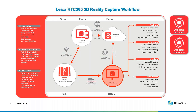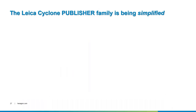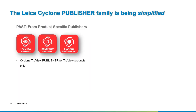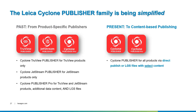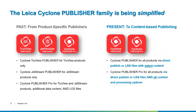We're going to talk about Publisher and Publisher Pro and the new publisher landscape going forward. The Leica Cyclone publisher family is being simplified. In the past, we had product-specific publishers — if you wanted to publish TrueView, you used TrueView Publisher; for Jetstream, Jetstream Publisher. Publisher Pro was an amalgamation with Panoramic Expo, RCP, and LGS. That's now changing. We will move to content-based publishing using Publisher and Publisher Pro only.